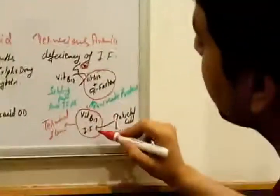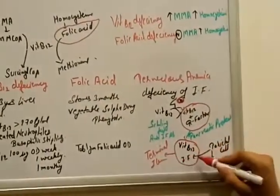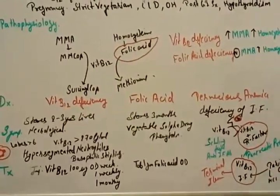And then when the intrinsic factor, see a girl, this girl, finds B12 is alone, now he is joining with it. And then goes to the terminal ileum, terminal ileum, the vitamin B12 absorption.